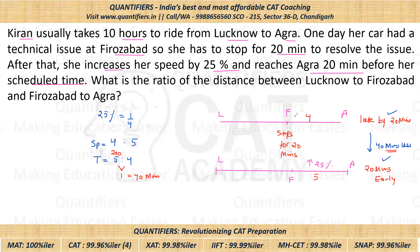So when she travels at her normal speed, she takes 200 minutes from Firozabad to Agra. Total she takes 10 hours, which equals 600 minutes. Therefore from Lucknow to Firozabad she usually takes 600 minus 200 equals 400 minutes.